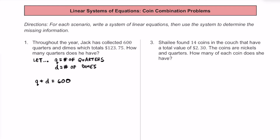We also know the total amount that they are worth. Quarters are worth 25 cents each, so 0.25 times Q is how much all the quarters are worth. Dimes are worth 10 cents, so 0.1 times D. Adding up the value of all the quarters plus all the dimes gives the total value, which is $123.75.